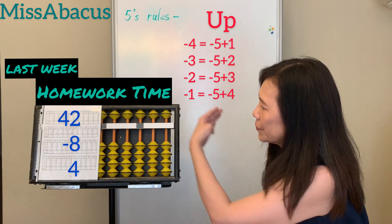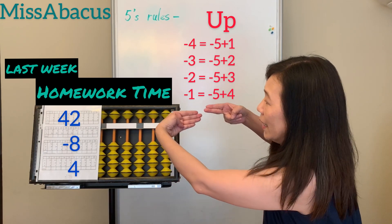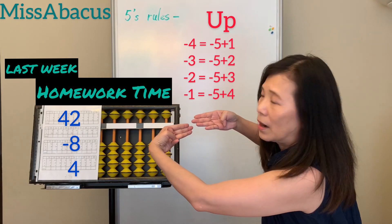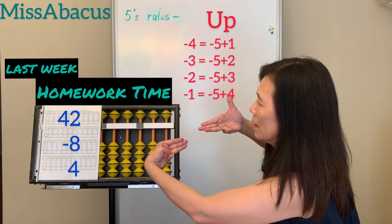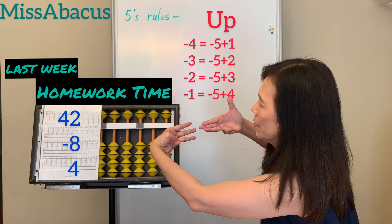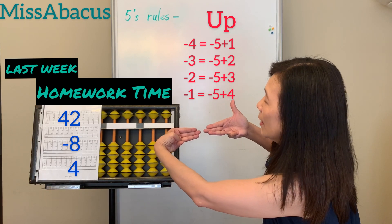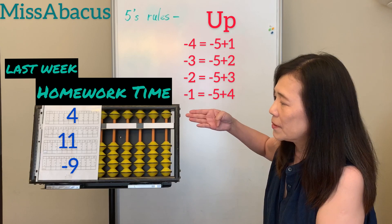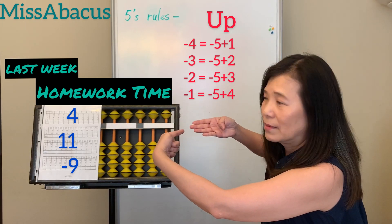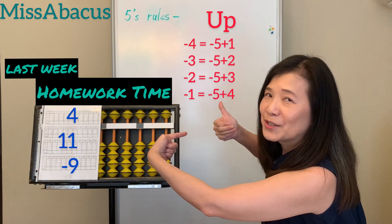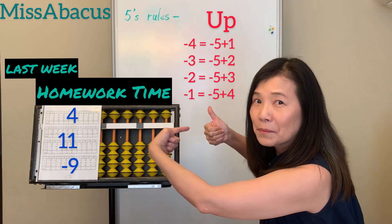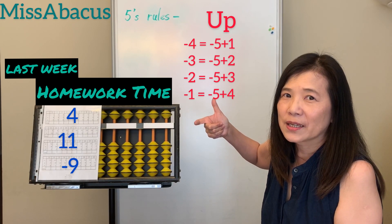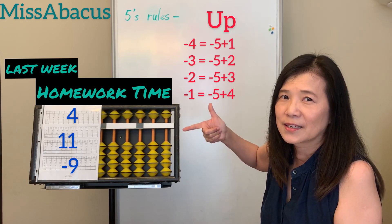Number 42 minus 8: 10's rule — minus 10, plus 2. Then plus 4: you have 5, so 5 minus 1. Minus 4. Answer: 38. The last problem: 4 plus 11 — ten and one. For the 1: 5 minus 4 — that's 1. Then minus 9: minus 10, plus 1. Answer: 6.